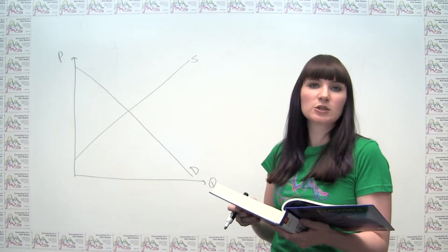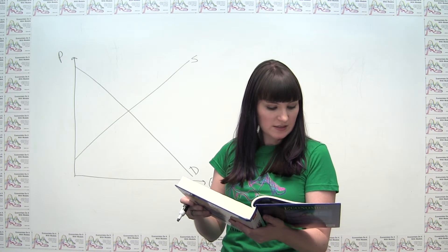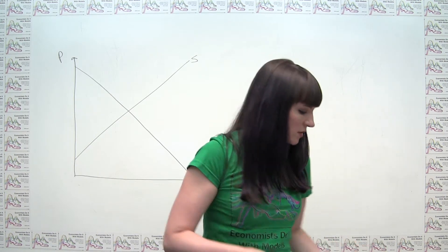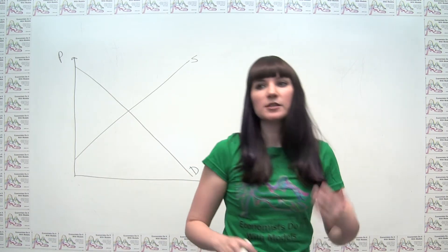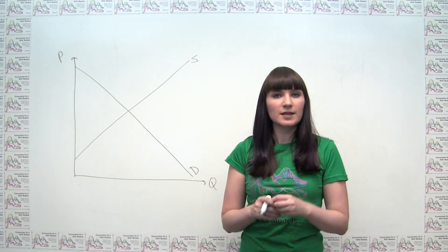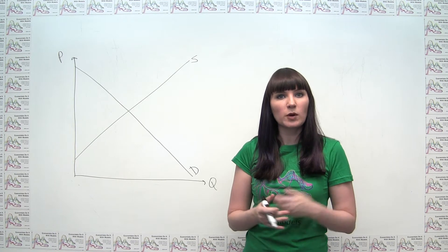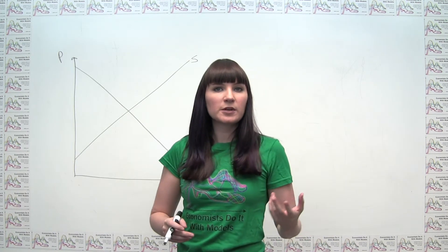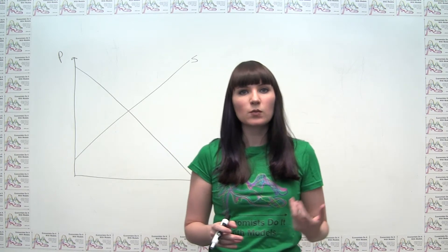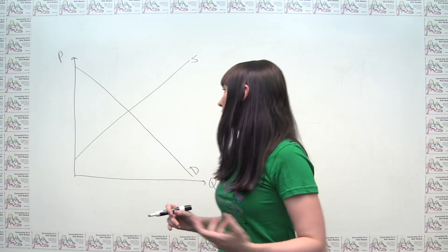The last part of the question asks us to look at the market for computers. It says the price of personal computers continues to decline as sales skyrocket — so that's a decrease in price and an increase in the quantity of transactions. We're trying to figure out what shift in either supply or demand could cause both a decrease in price and an increase in equilibrium quantity.